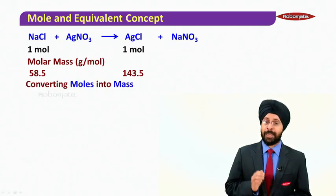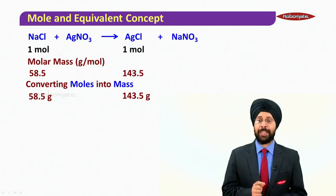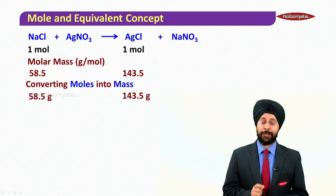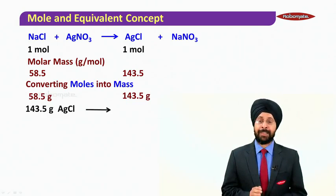Now from here, converting the moles into mass, we can write down 58.5 grams of NaCl is producing 143.5 grams of AgCl.